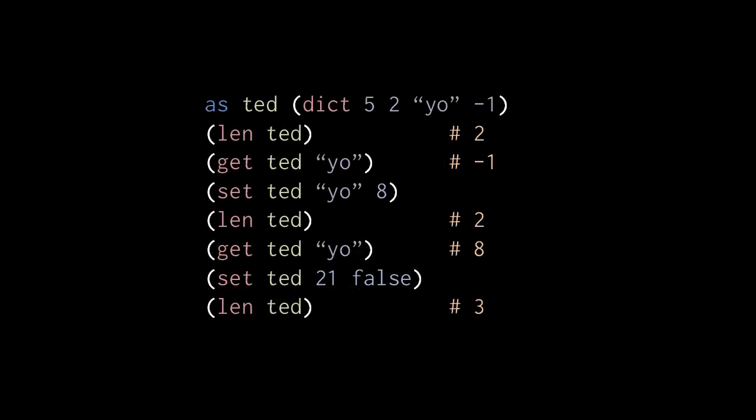The operators len, get, and set can all be used on dictionaries as well as lists. Here we assign to ted a new dictionary with two key-value pairs, the key 5 with a value 2, and the key yo with a value negative 1. Len ted first returns 2 because the dictionary has two key-value pairs.